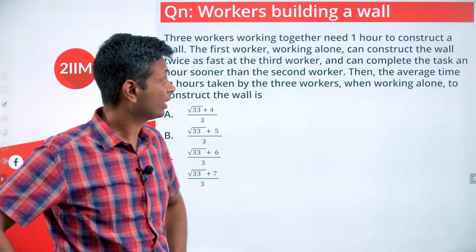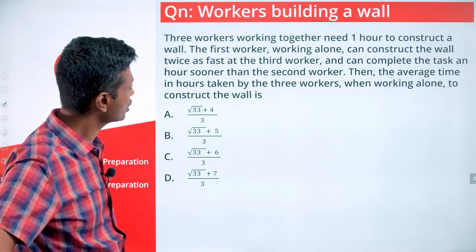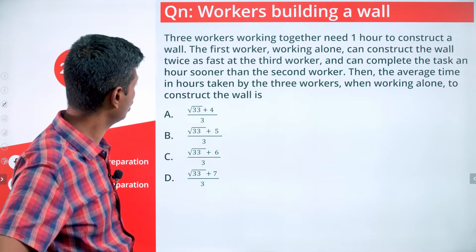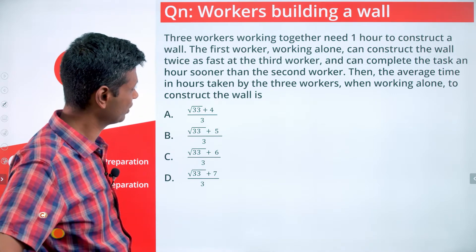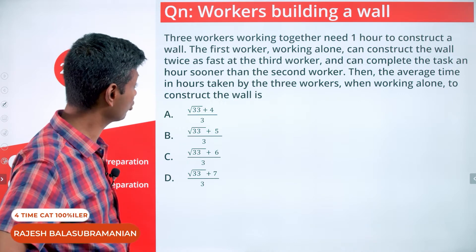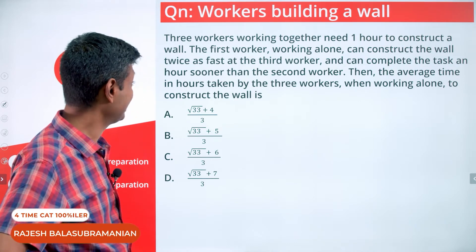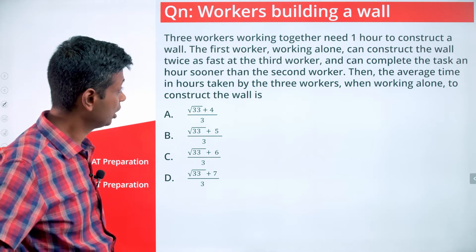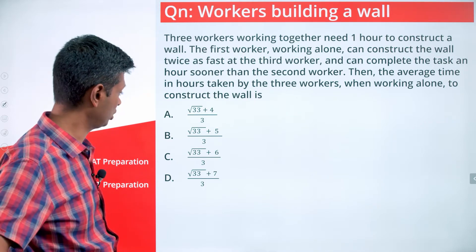Three workers working together need one hour to construct a wall. The first worker working alone can construct a wall twice as fast as the third worker and complete the task an hour sooner than the second worker. The average time in hours taken by the three workers when working alone to construct the wall is...